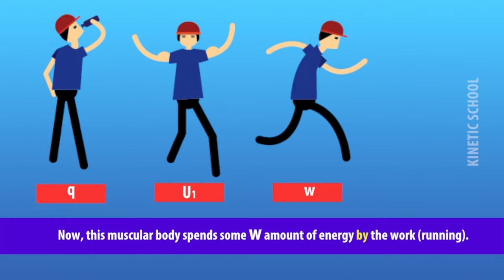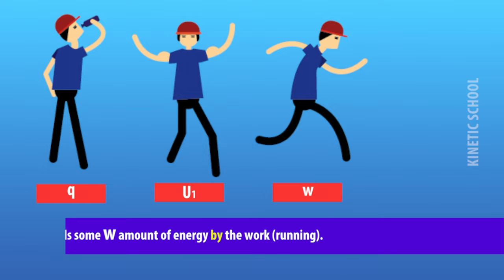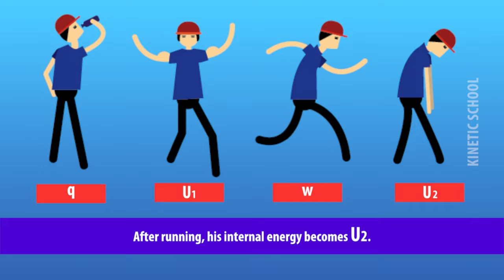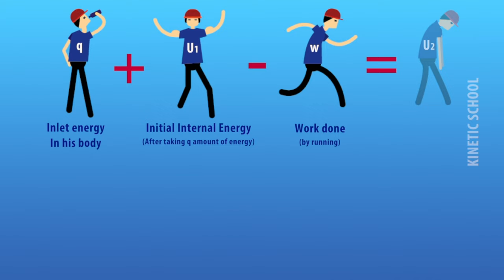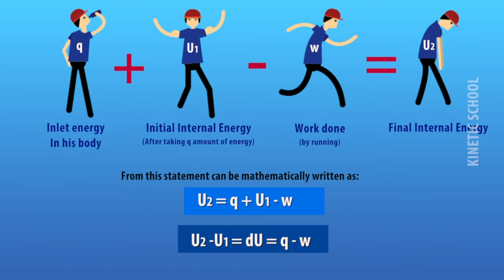Now this body spends some W amount of energy doing work, suppose running. After running, his internal energy becomes U₂. Inlet energy to his body plus the initial internal energy minus work done equals final internal energy. This statement can be mathematically written as U₂ - U₁ = ΔU = Q - W.